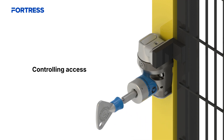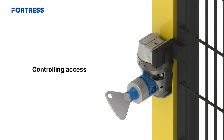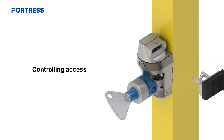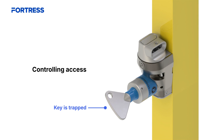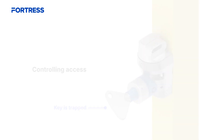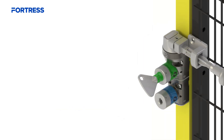The guard cannot be opened until the correct key is inserted. The actuator is then released, allowing access. That key remains trapped until the guard is closed and the actuator is reinserted into the access lock.